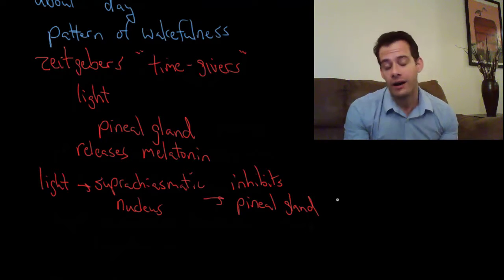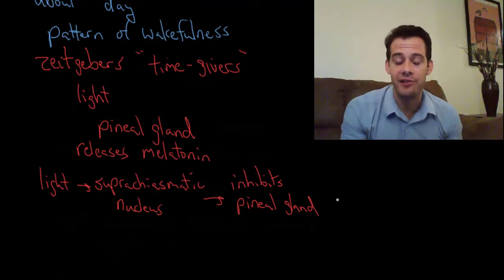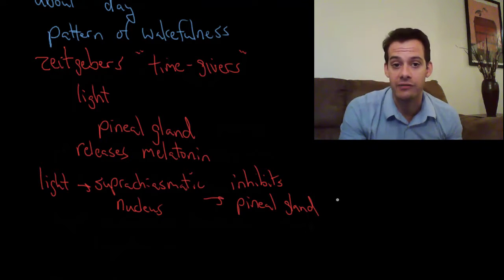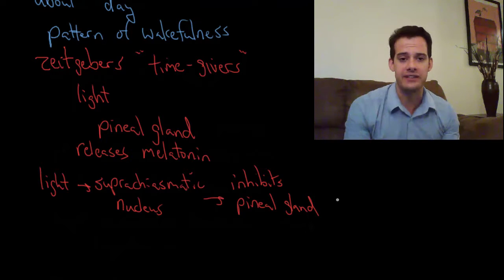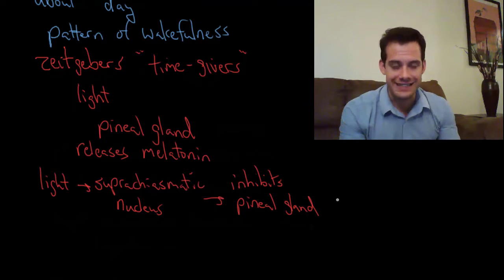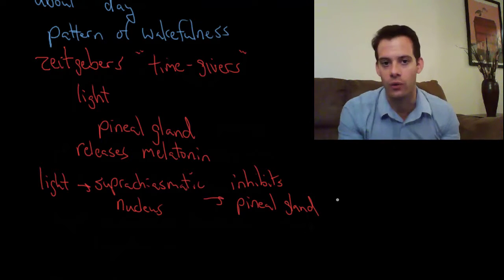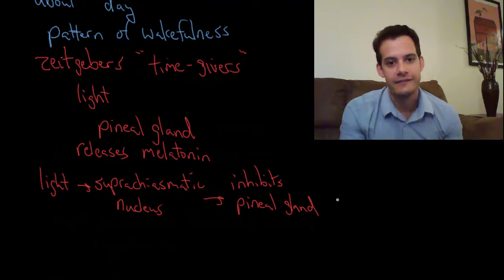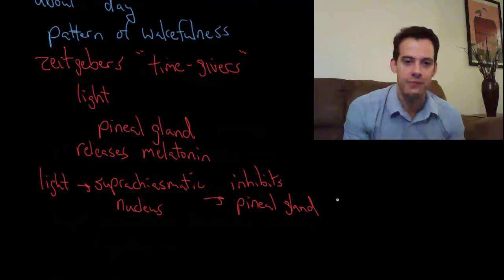So this explains why when you're sitting in a dark room it's easier to fall asleep than out in the middle of the sunshine. Now of course you can override this. If you're tired enough you can fall asleep in a very bright environment. So it's not deterministic. It's not the case that light definitely causes you to be awake or causes you to be asleep. You can be feeling alert in the dark and you can be feeling drowsy in light. But generally this is how light influences your level of alertness.